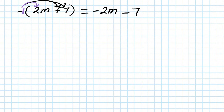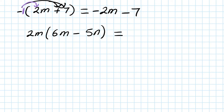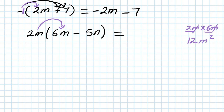Now I'm going to add a bit more. Let's say 2m, open bracket, 6m minus 5m. So 2m times 6m: number times number and letter times letter. So 2 times 6 is 12, and m times m is m squared. So your answer is 2m times 6m equals 12m squared.